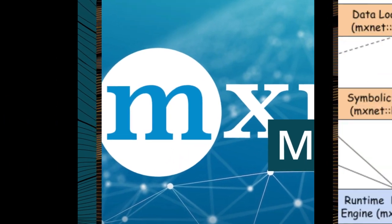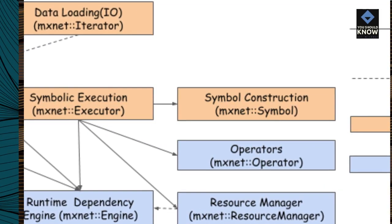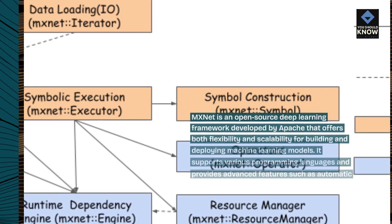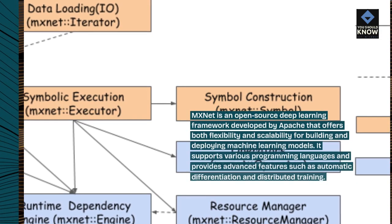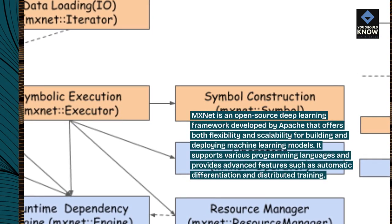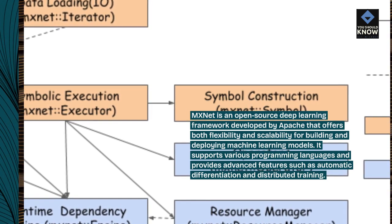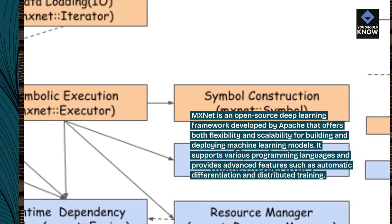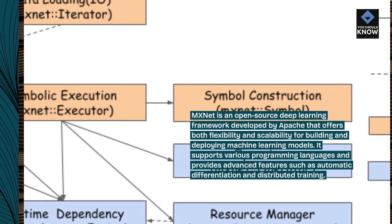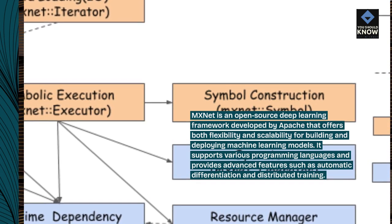MXNet is an open-source deep learning framework developed by Apache that offers both flexibility and scalability for building and deploying machine learning models. It supports various programming languages and provides advanced features such as automatic differentiation and distributed training.